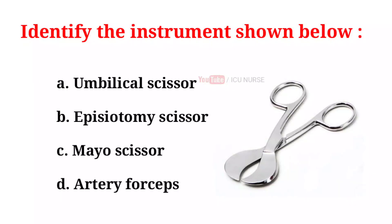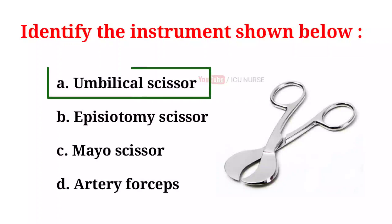Identify the instrument shown below. A. Umbilical scissor. B. Episiotomy scissor. C. Myo scissor. D. Artery forceps. And the correct answer is A. Umbilical scissor.